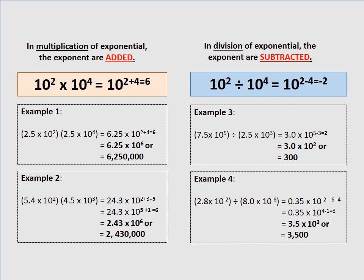In division of exponential notations, the exponents are subtracted. For example, 10 raised to the power of 2 divided by 10 raised to the power of 4: 2 minus 4 equals negative 2. For example 3: 7.5 times 10 raised to the power of 5 divided by 2.5 times 10 raised to the power of 3. Divide 7.5 by 2.5 to get 3.0, then subtract exponents: 5 minus 3 equals 2. The result is 3.0 times 10 raised to the power of 2, or 300.